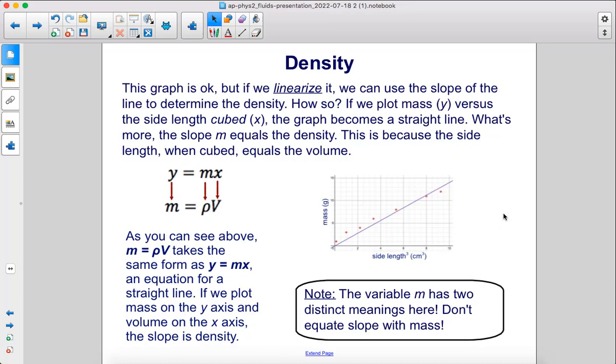This graph is okay, but if we linearize it, we can use the slope of the line to determine the density. How so? Well, if we plot mass on the y-axis versus the side length cubed, the graph becomes a straight line. What's more, the slope m equals the density. This is because the side length when cubed equals the volume.